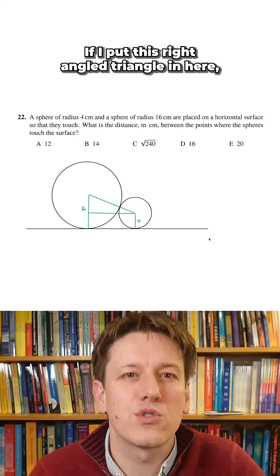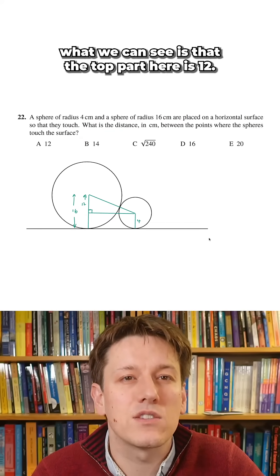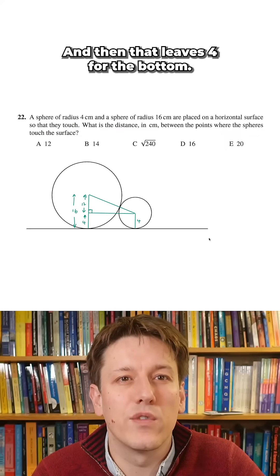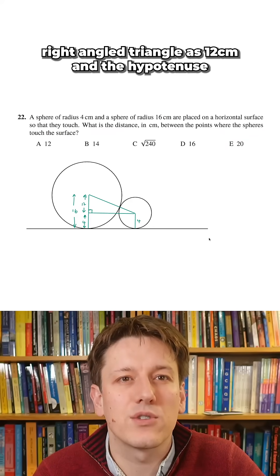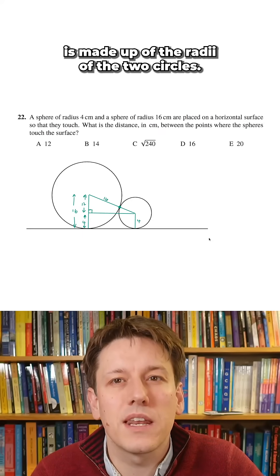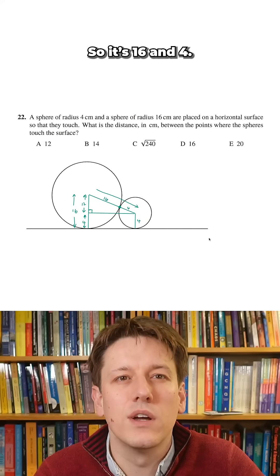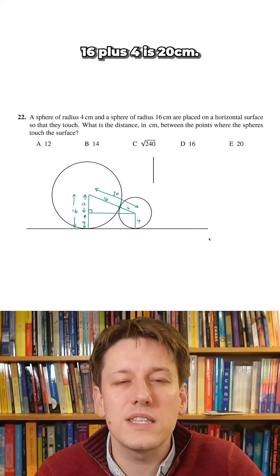If I put this right angle triangle in here, what we can see is that the top part here is 12 and then that leaves 4 for the bottom. So I've got one side of that right angle triangle of 12 centimeters and the hypotenuse is made up of the radii of the two circles, so 16 and 4. 16 plus 4 is 20 centimeters.